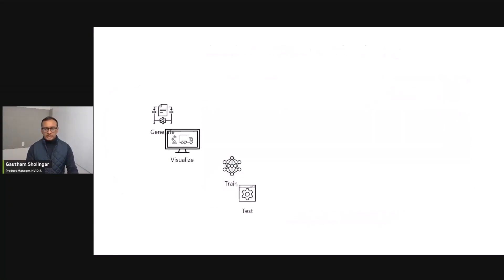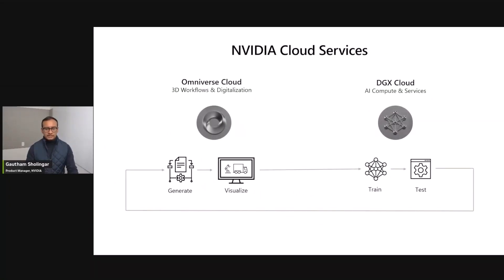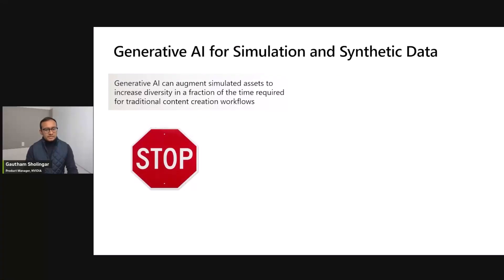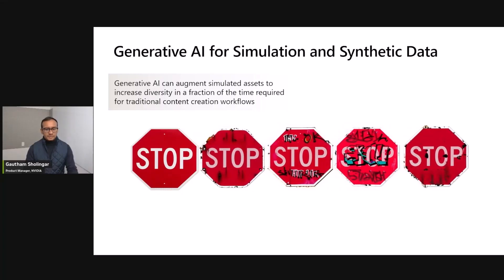This brings us to a complete workflow highlighting how you can leverage Omniverse Cloud to generate and visualize data sets and content, and then use the AI compute capabilities of DGX Cloud to train and validate your AI algorithms before deployment. We're also seeing incredible generative AI work that will transform this space — for example, using state-of-the-art stable diffusion models to overlay decals on an existing stop sign and add diversity to simulated assets. Content creators and artists can go from days or hours of work to minutes and generate new examples, fine-tuned for specific use cases. This space is going to grow a lot, so please stay tuned.